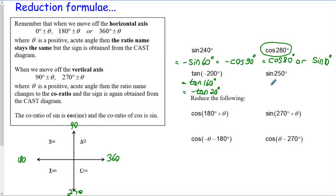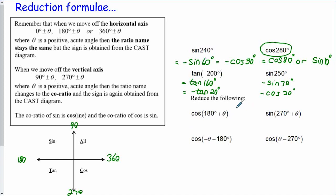Lastly, sine of 250 degrees. We're in quadrant 3. Sine is negative in quadrant 3. We are just 70 degrees away from a horizontal axis, or 20 degrees away from a vertical axis. But remember that if we come off a vertical axis, we need to change sine to cos or vice versa. You might say we could do a lot of this on our calculator - yes we can, but it's important that we understand this as well.